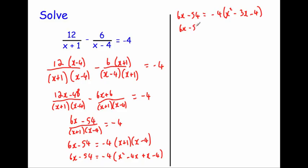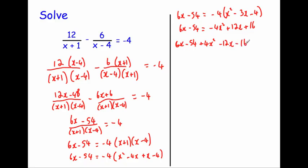Multiplying out that bracket gives 6x minus 54 equals minus 4x squared plus 12x plus 16. To make the right-hand side zero, I add 4x squared to both sides, subtract 12x from both sides, and subtract 16 from both sides. Bringing everything to the left gives 4x squared minus 6x minus 70 equals 0.